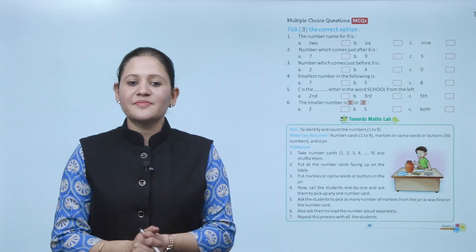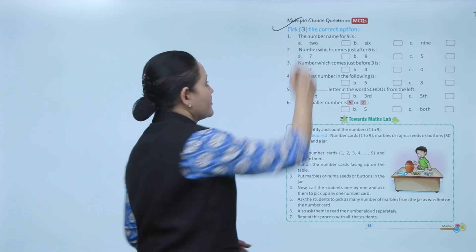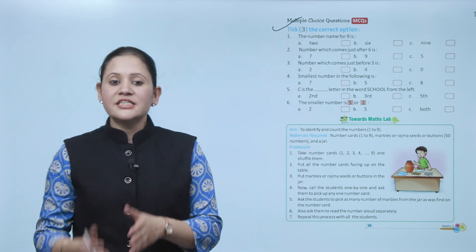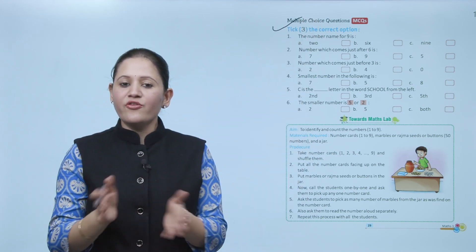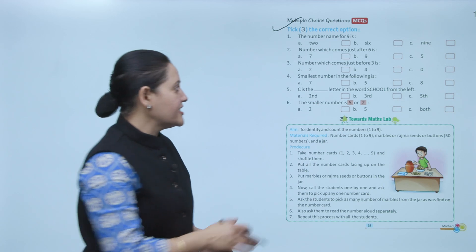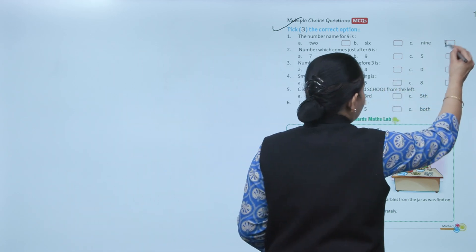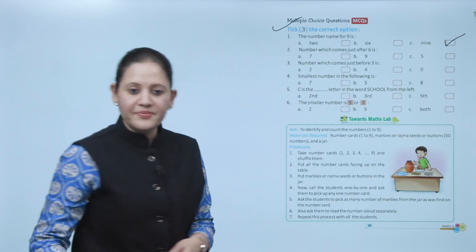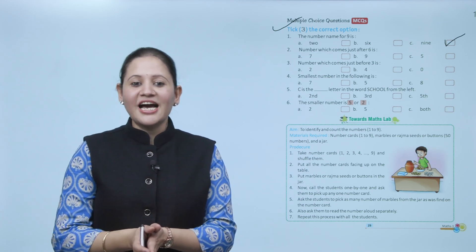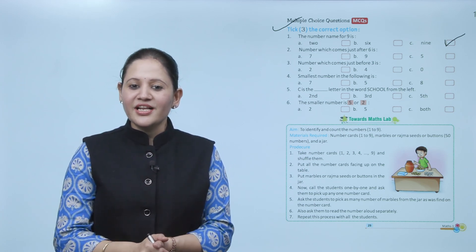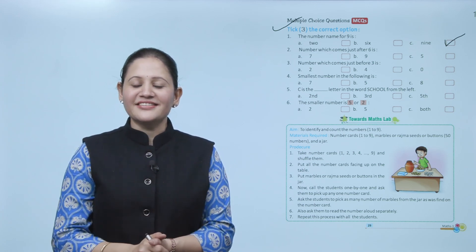Next is the multiple choice question. Tick the correct option: the number name of 9 is N-I-N-E, so option C is correct. Here we end the chapter — I hope you understood it very well. Now you have to practice it.